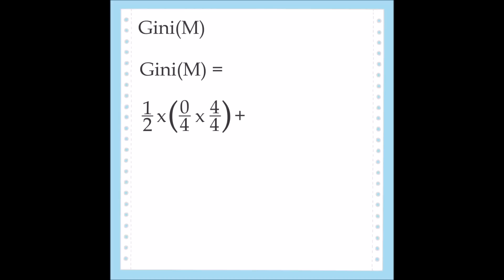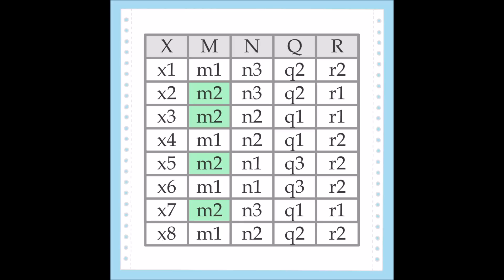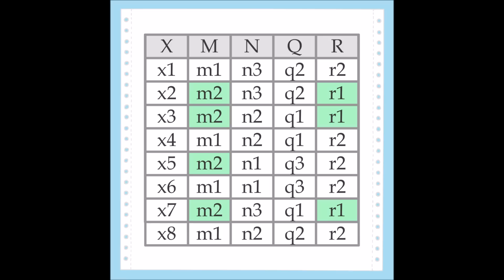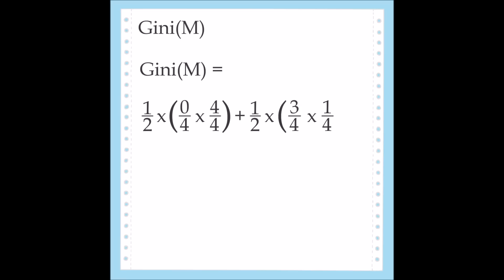Now we look at the connection between M1 and R2. M1 and R2 are always together, so the probability of M1 and R2 being connected is 4 out of 4, or 1. Multiply 0 and 1, then multiply that times 1 half for the probability of M1. This number is then added to M2. The value for M2 is calculated exactly the same way. M2 appears in 50%, or one half, of the tuples. M2 is paired with R1 in 3 out of 4 tuples, and with R2 in 1 out of 4 tuples. The total Gini value for attribute M is 3 over 32, or 0.09375.